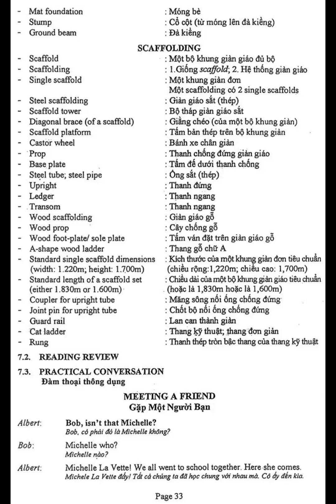Steel tube, steel pipe, upright, ledger, transom. Wood scaffolding: wood prop, wood foot plate, sole plate, A-shape wood ladder. Standard single scaffold dimensions: width 1.220 meters, height.